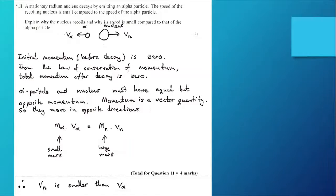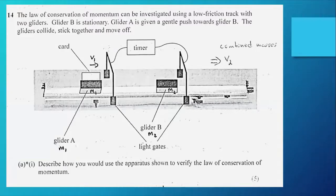That follows from what we've just said. Momentum is a vector quantity. They move in opposite directions. The alpha particle has a small mass, the nucleus has a large mass. On the left hand side we've got a small mass with large velocity, on the right hand side we've got a large mass and a small velocity, so vn would of necessity be smaller than v alpha.